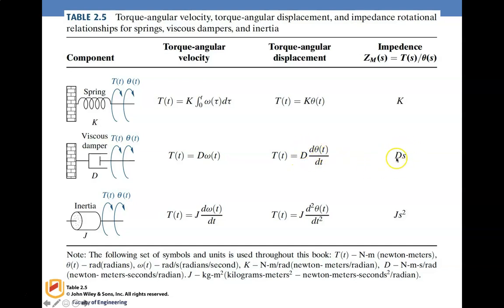For inertia, you have moment of inertia J with applied torque T producing displacement theta. The torque-angular displacement relationship is J times d²theta/dt², and in terms of angular velocity it is J times d-omega/dt.